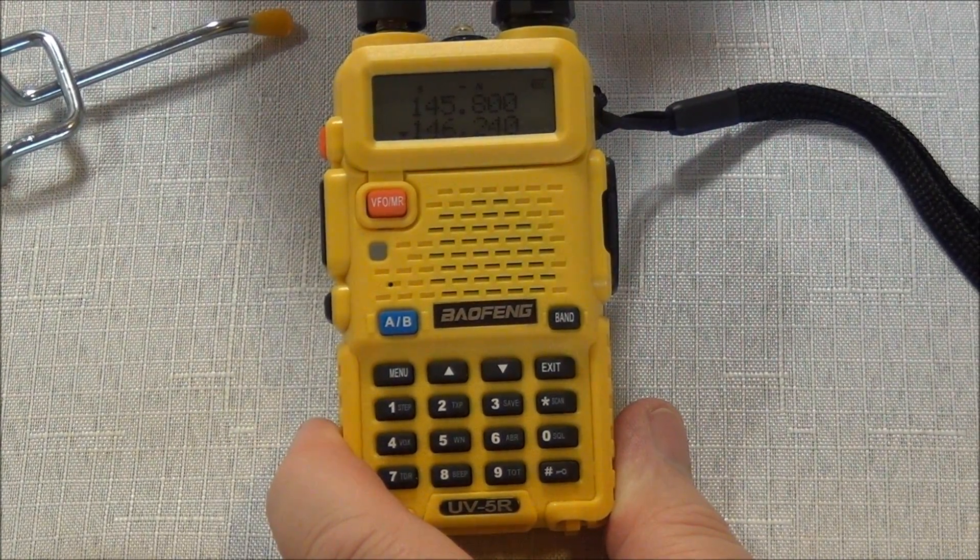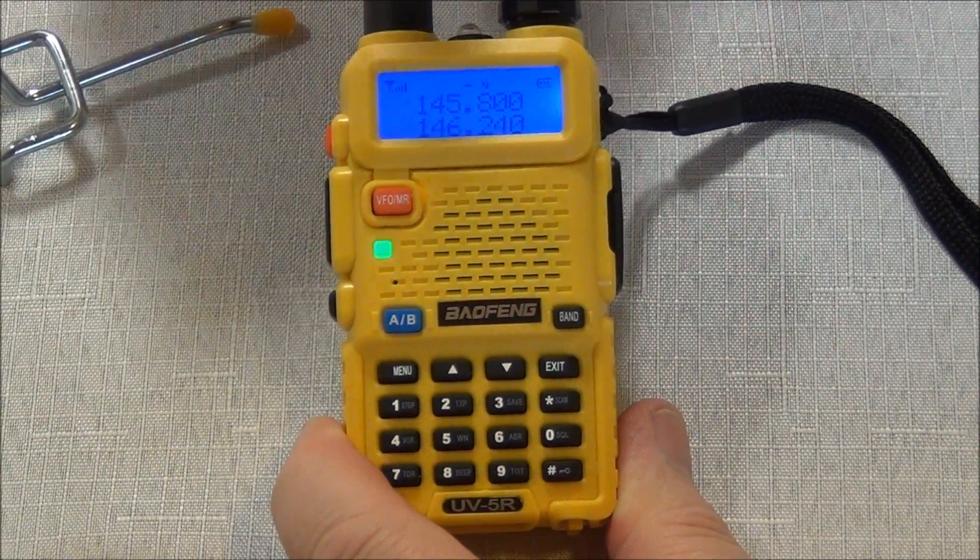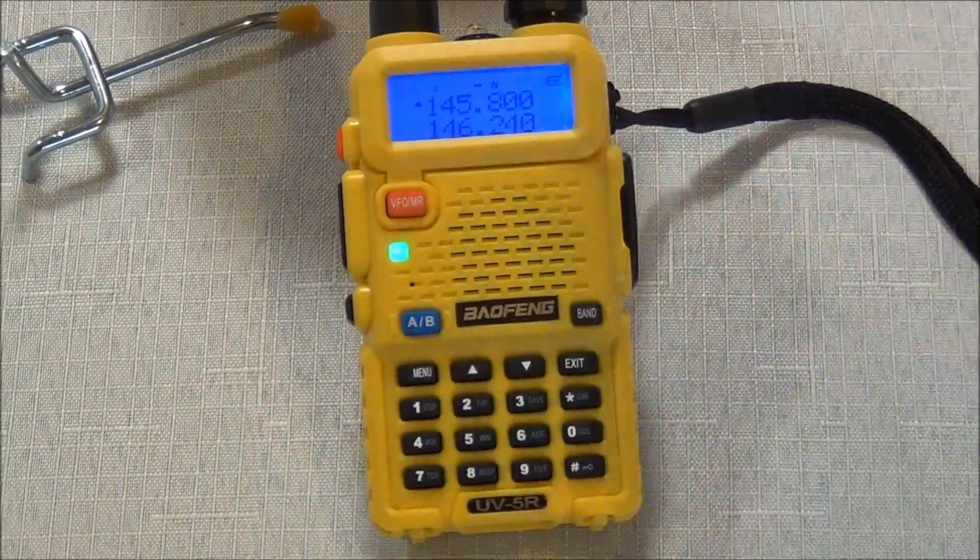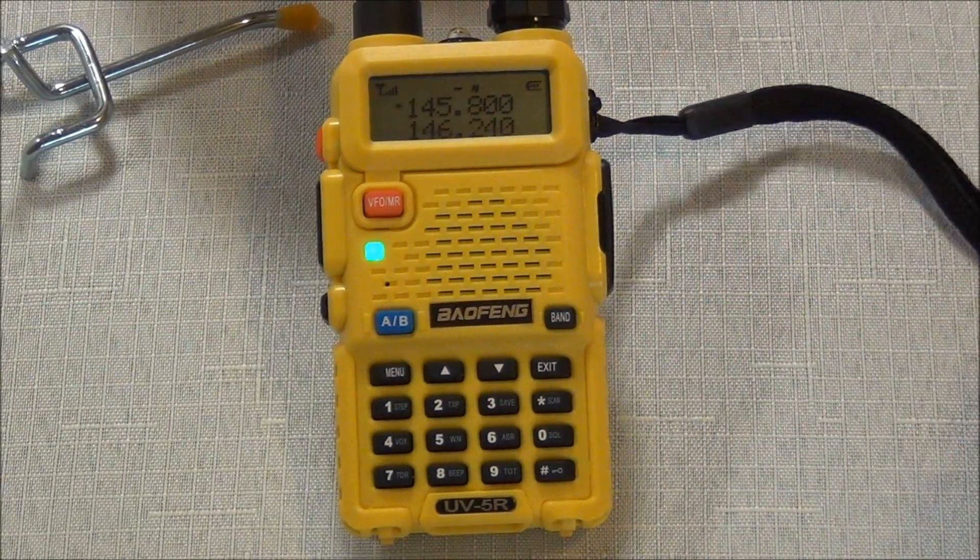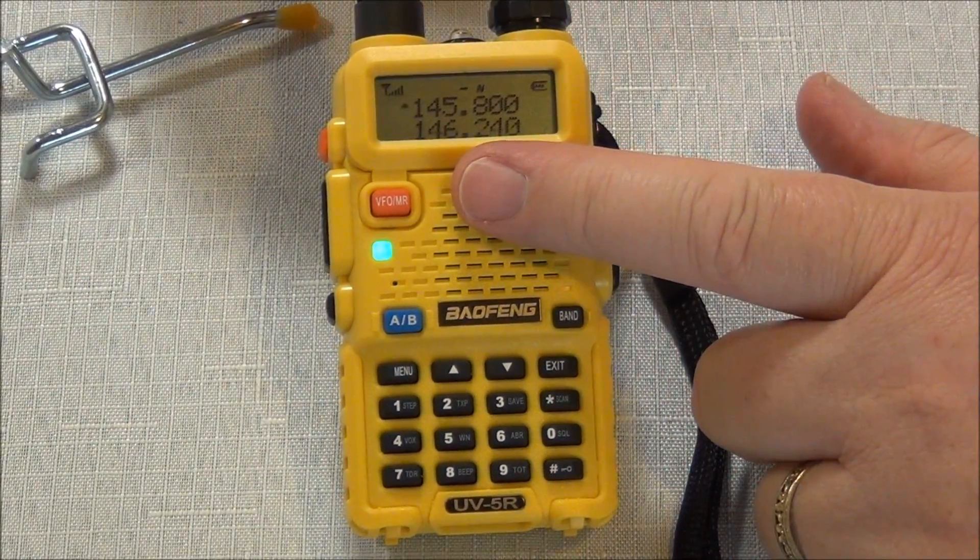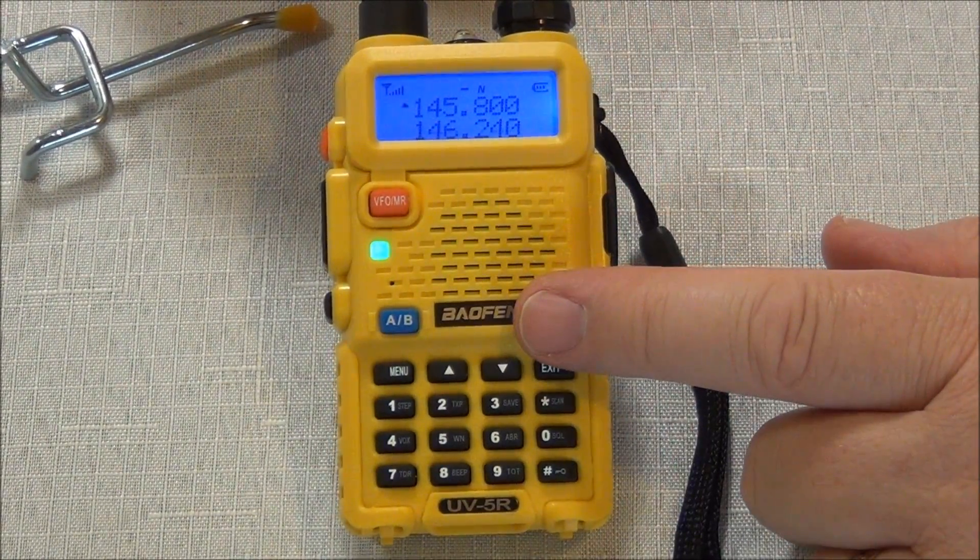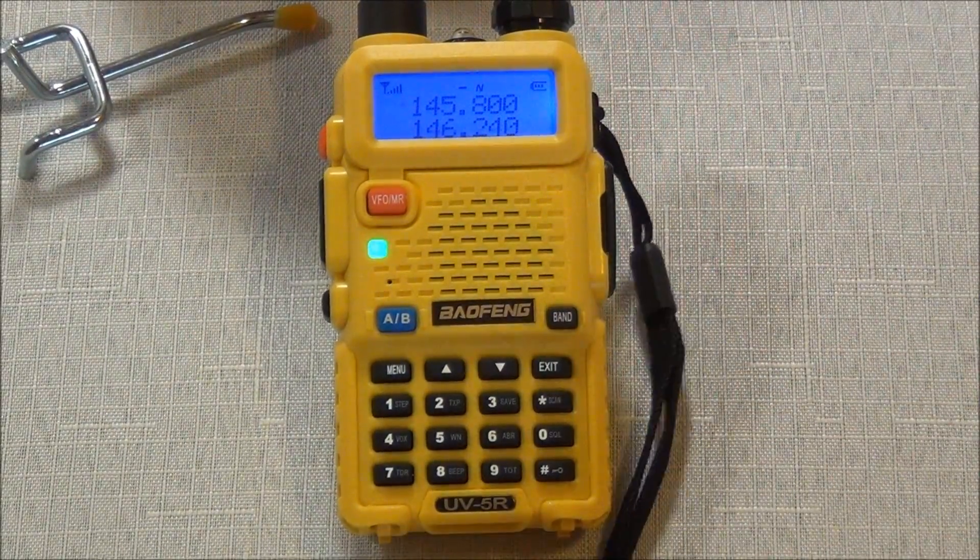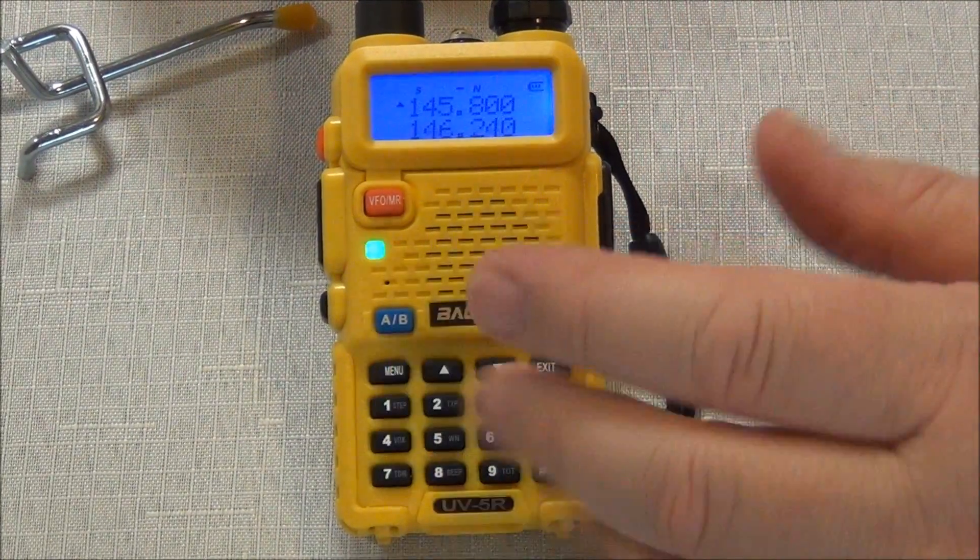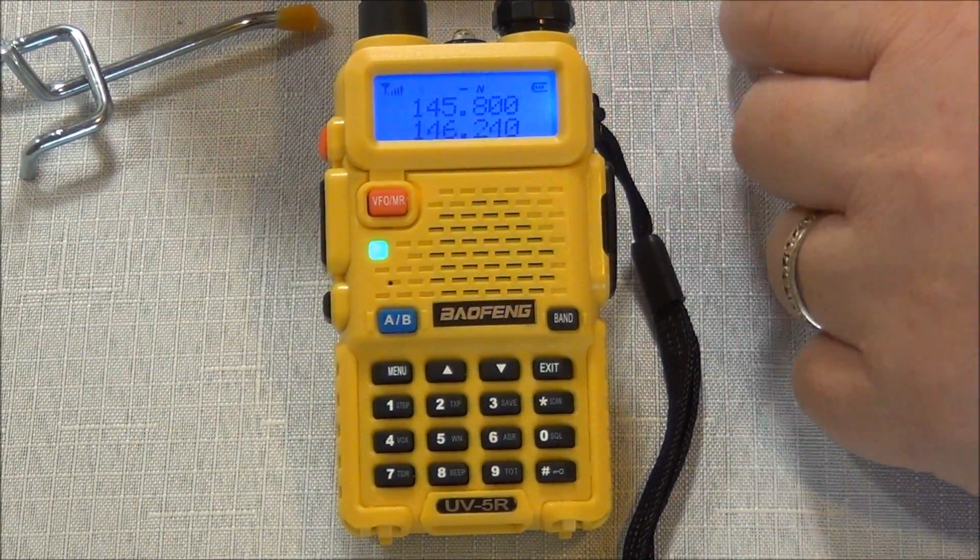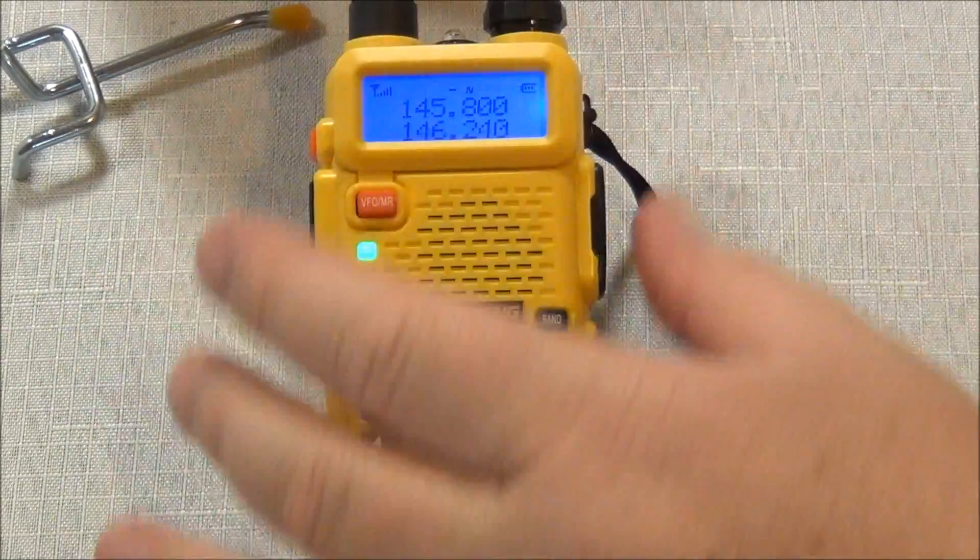Now at this point, that repeater should be programmed. Now here's the kicker. Another thing to consider. With the keypad on this radio you cannot program names into your channels. You can program names into your channel using the software. And if you have programmed a channel in using the keypad like we just did, and then you go back later and plug it into the software, you can add a name to it using the software. You don't have to reprogram the whole thing again.